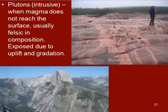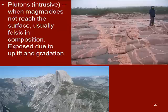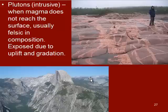Then we have what are called plutons, or intrusive igneous rocks. We see these exposed at the surface where we've had weathering, uplift and gradation lifting the crust upwards, eroding the surfaces, and then exposing those rocks. These occur when magma doesn't reach the surface and are usually felsic in composition. Yosemite is a good example of one huge pluton, and here you can see one in New Brunswick, Canada.